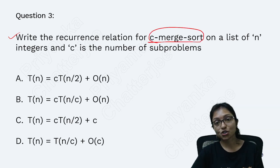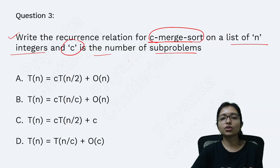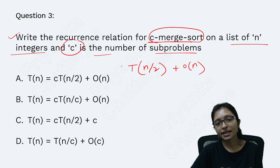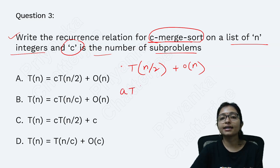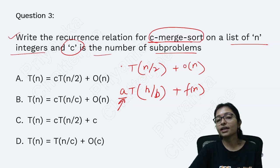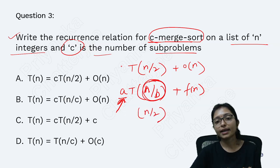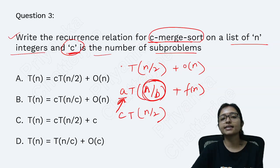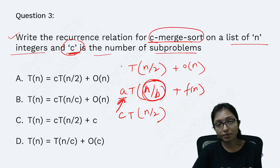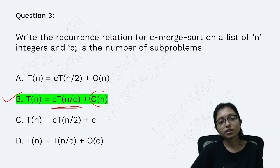Here it is C-marked sort. Not only marked sort — list of N integers, C is the number of sub-problems. Normally we know that T(N/2) plus order of N. Here the general form is A·T(N/B) + F(N), where A is how many times you are dividing and B is the size of the sub-problem. In C-marked sort, the size of the sub-problem is N/2 and the number of sub-problems is C. That's why it is C·T.